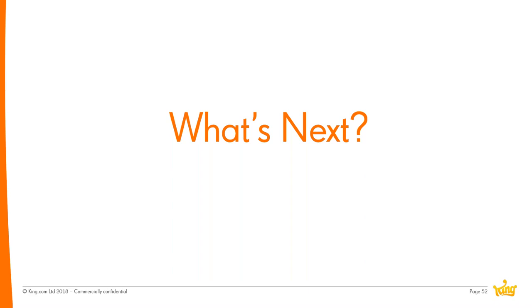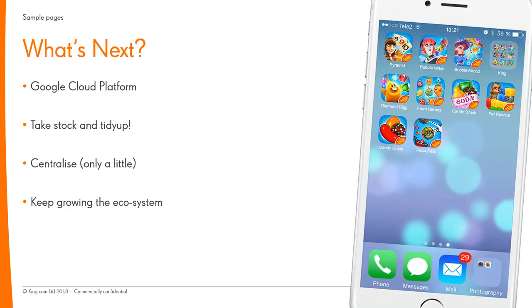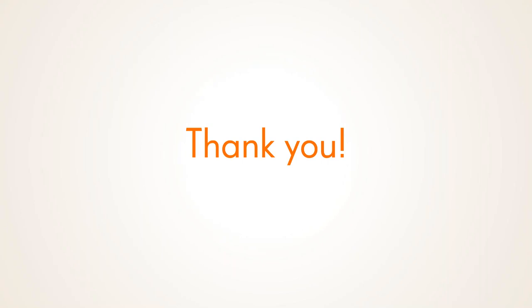King is not finished yet. Current priorities include moving some data into Google Cloud, which will allow machine learning capabilities that can be integrated directly with Looker. With all the content and models people have built, some housekeeping is needed to tidy up unused content. Users have also asked for more centralized content around standard KPI metrics. Finally, King wants to keep growing the ecosystem around Looker through more integrations, tools, services, and automated accurate reporting so other people don't have to worry about it.